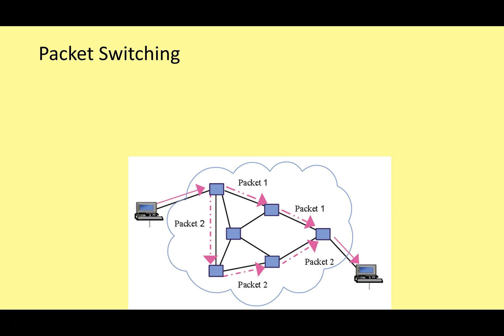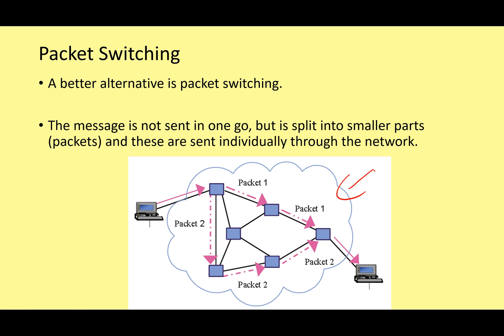What we use today is packet switching. This is when we send the message not in one go as one large section of data, but split it into smaller parts called packets. These packets are sent individually through the network — some packets one way, some another — depending on things like network traffic and availability. But eventually all the packets end up at the right place to be put back together again.